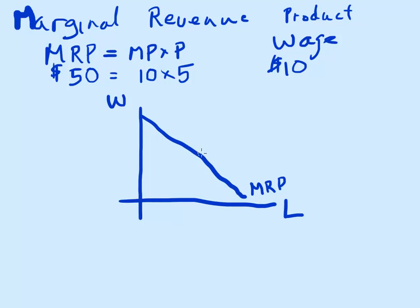If my marginal product or price go up, this shifts out, increasing demand for labor because they produce more for me. And let's say the wage is right here, horizontal at $10 an hour.